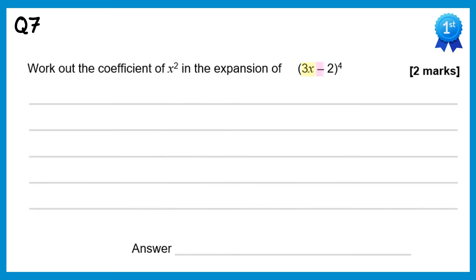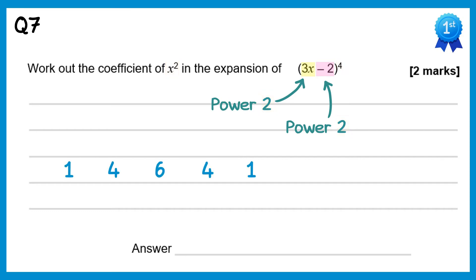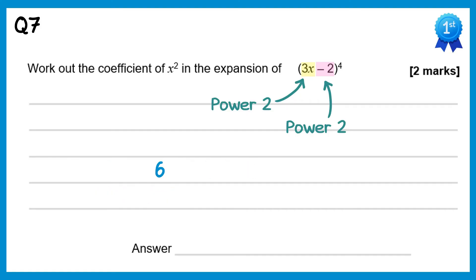In this question a equals 3x and b equals negative 2. We want the coefficient of x squared, so we need 3x to the power 2 and negative 2 to the power 2, since 2 plus 2 makes 4. We're in the fourth row of Pascal's triangle: 1 4 6 4 1. The term corresponding to 3x squared uses the coefficient 6. So we take 6 times 3x squared times negative 2 squared. 3x all squared is 9x squared, negative 2 squared is 4, so 6 times 9 times 4 gives 216x squared. The answer is 216.